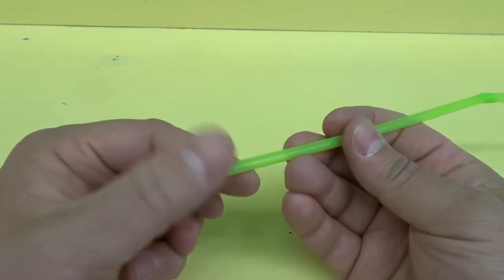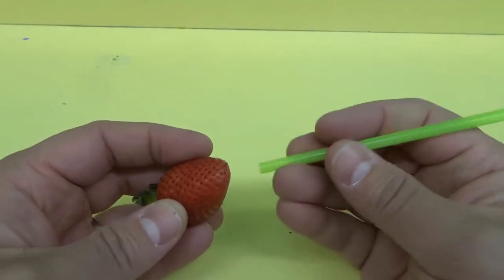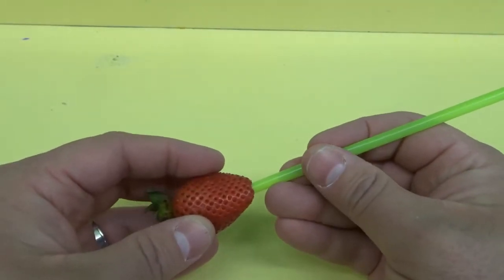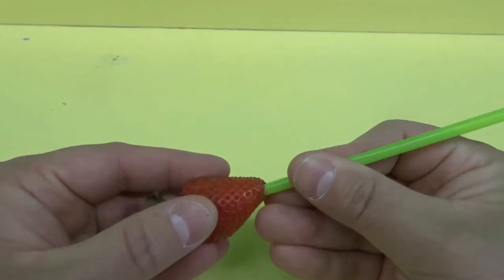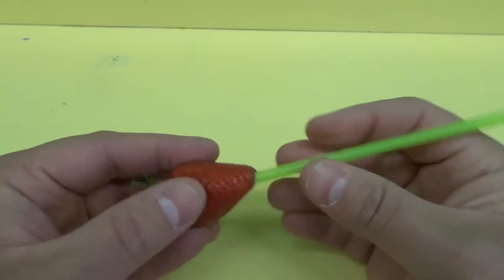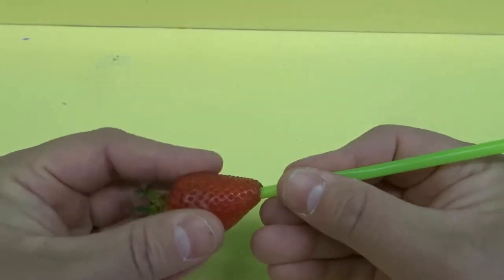But I'm just using this regular flimsy straw. And from the bottom over here, I'm just going to center it and make sure it's nice and straight. And as I insert the straw, I'm twisting. Eventually, I'm going to get to the top and it's going to push out the stem.